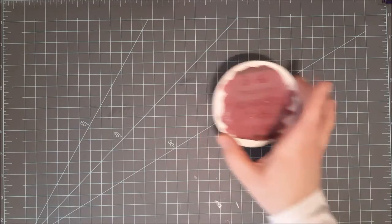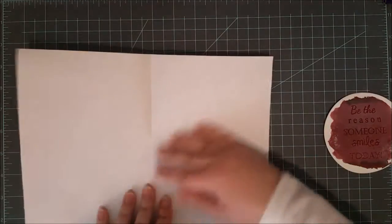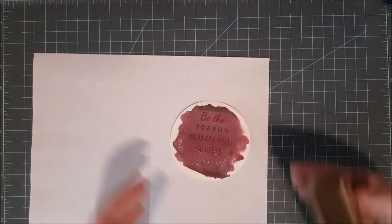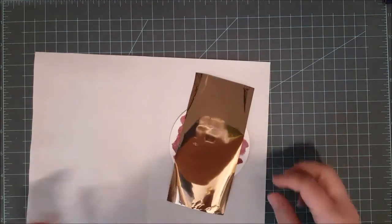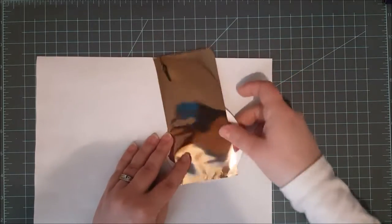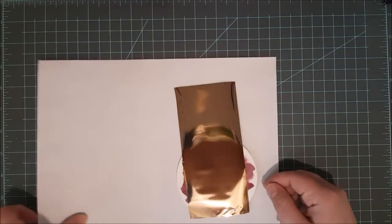Once that's done I'm going to take the same rose gold foil that I used before and lay that over the top of the sentiment. I've already got it in my carrier sheet ready to go. And I'm going to put this through my laminator again.